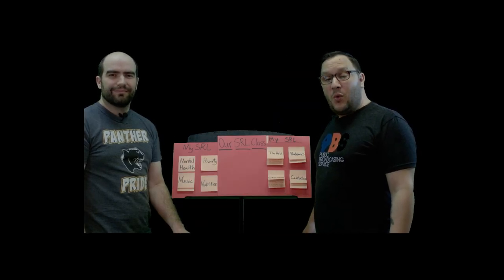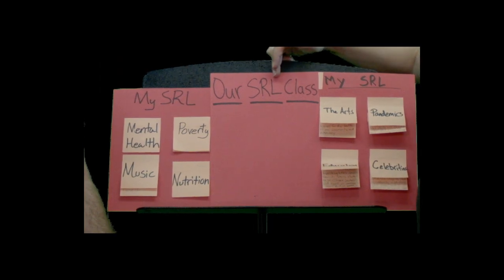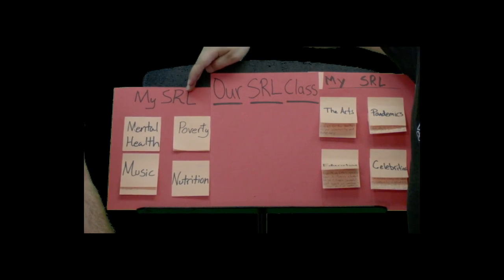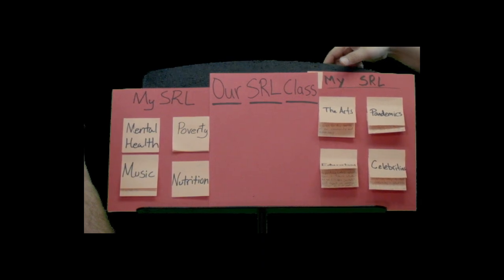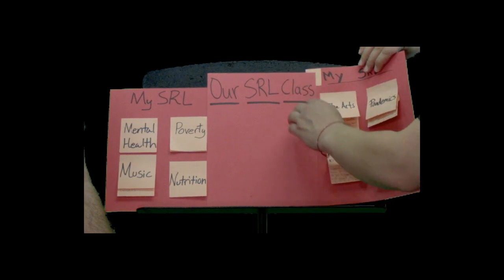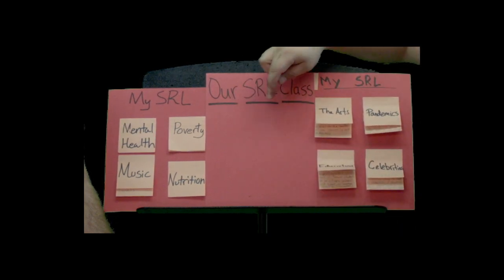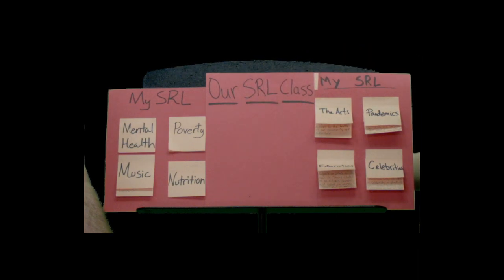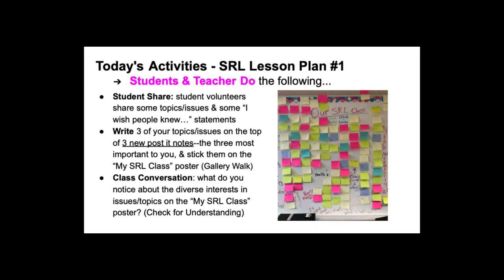Now for the next part of our activity: you will create an 'Our SRL' class poster. You will use your MySRL handouts and the handout of a friend or family member, taking your top three from your eight topics. You will post your top three topics — not the statements, just the topics — on this 'Our SRL' class poster so you can gain a deeper understanding of what topics are most important to your class.